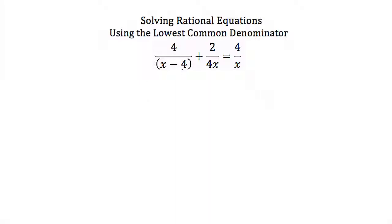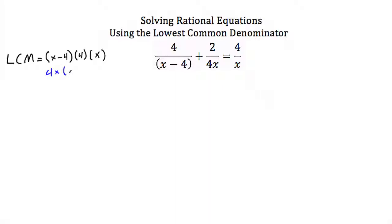here we have 4 over x minus 4, plus 2 over 4x, is equal to 4 over x. The least common multiple of all our denominators: the factors of the first denominator is x minus 4. That's its only factor. Then we multiply by all the factors of the next denominator: 4 and x. For the last denominator, 4 over x, the only factor is x, but we already have x, so we don't write it again. Our lowest common denominator is x minus 4 times 4 times x, or 4x times x minus 4.